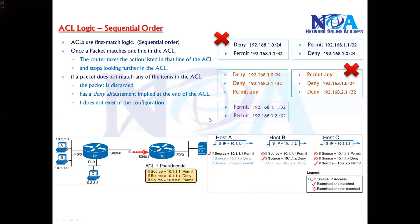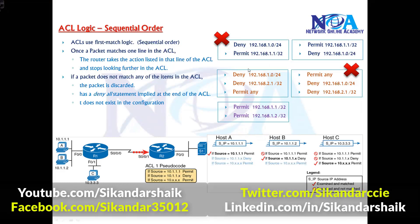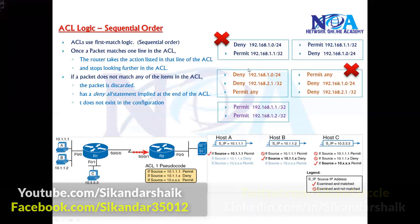So this sequence is very important. If you don't understand the sequence and randomly write rules, that's not going to work. When writing or modifying ACL rules in the future, make sure you follow the sequence, and more specific entries should always be written at the beginning — whether it is a permit or deny.